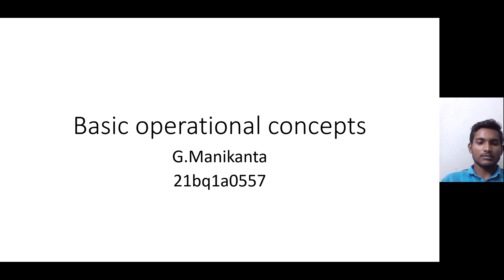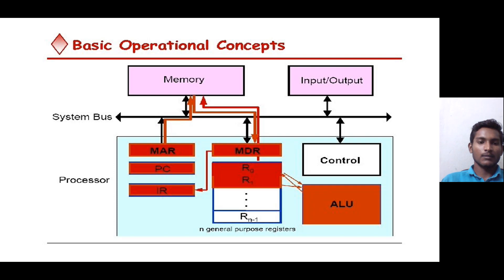My topic is basic operational concepts. This is the overview. The system bus is connected to the memory, I/O devices, and the processor. The system bus is used to transfer data from one location to another. The processor contains various types of registers along with the control unit and ALU. These registers are further divided into two types: general purpose registers and special purpose registers.